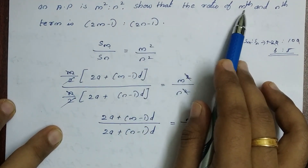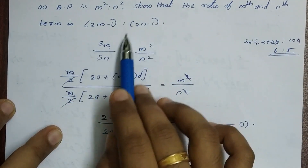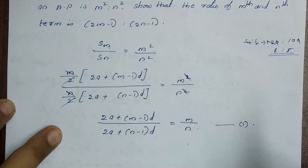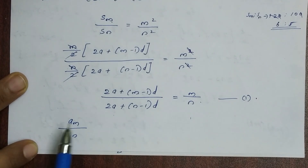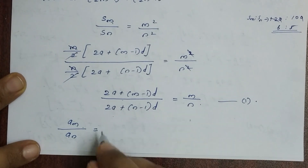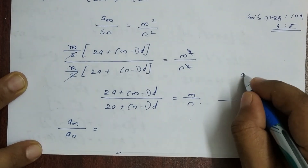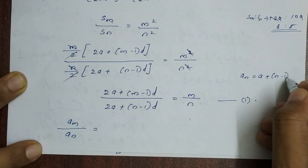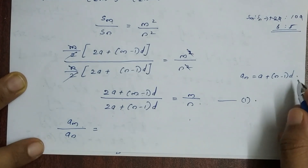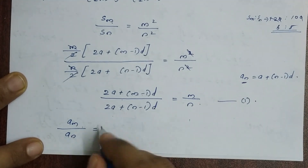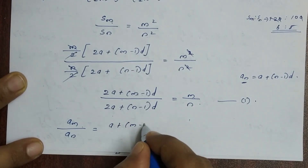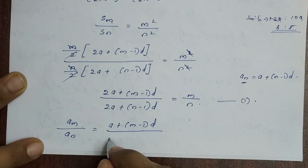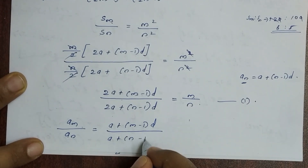Show that the ratio of the mth term to the nth term is (2m-1) to (2n-1). So am divided by an — that is the ratio of the mth term to the nth term. The nth term is a + (n-1)d. So am/an equals [a + (m-1)d] divided by [a + (n-1)d].